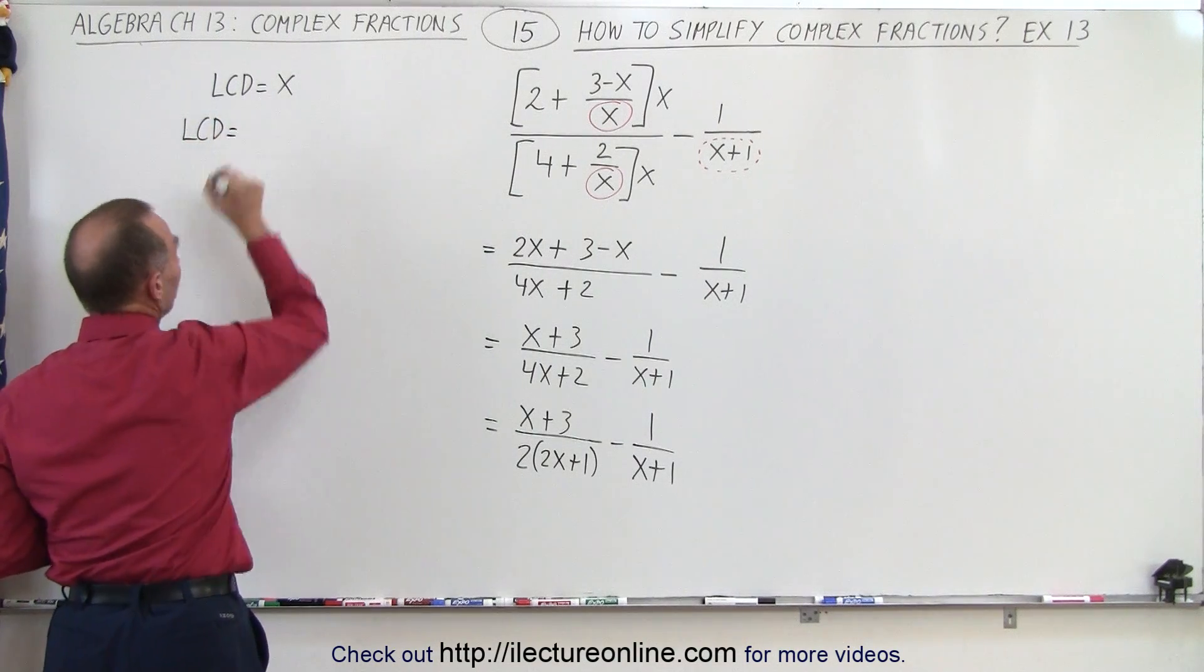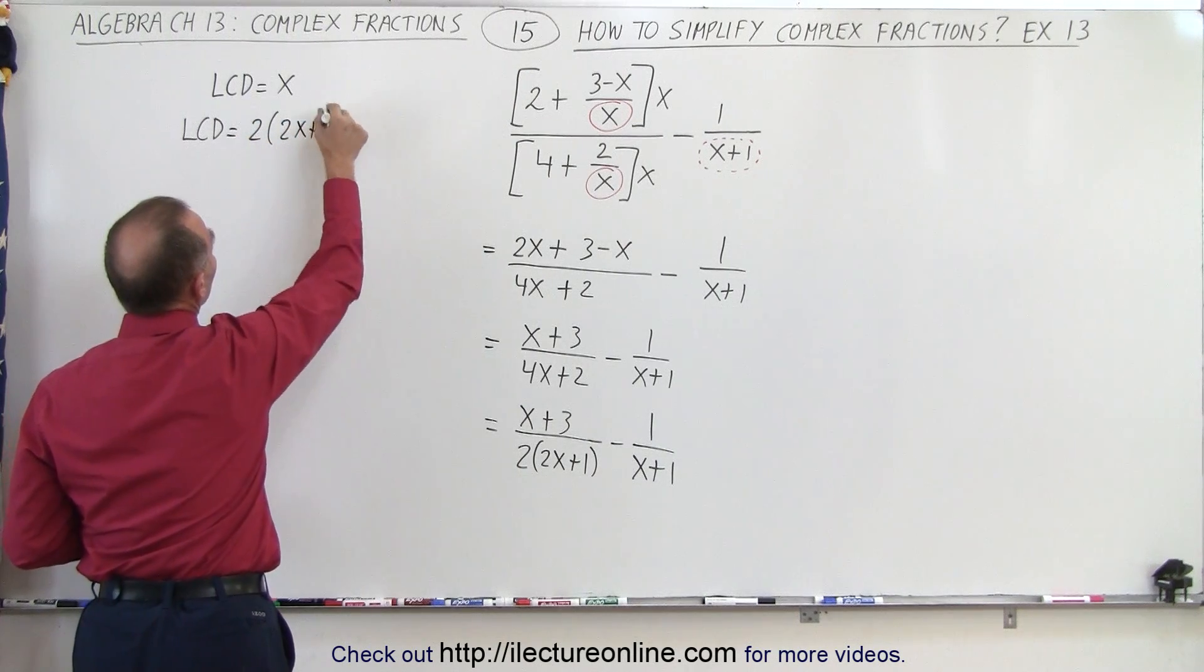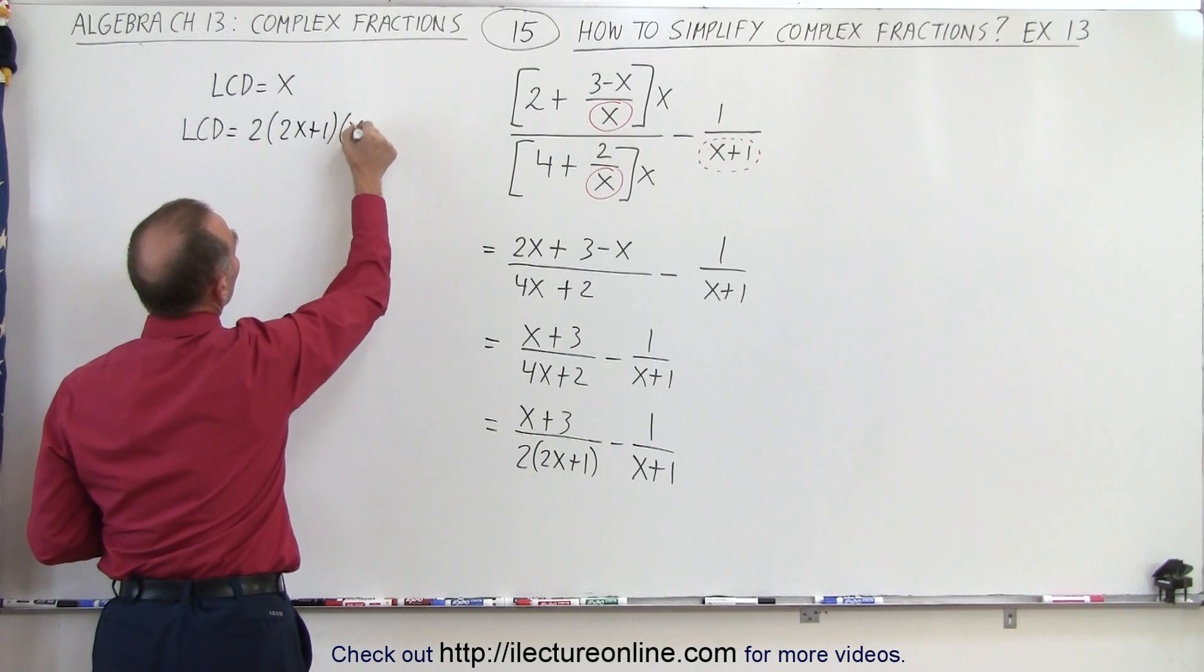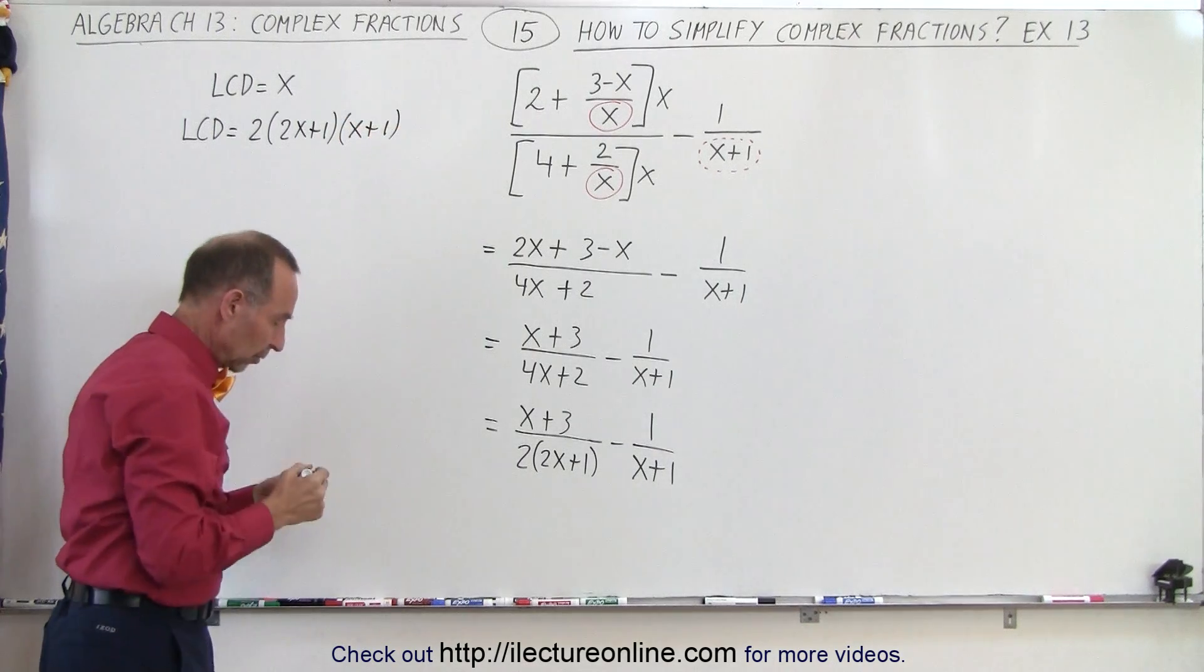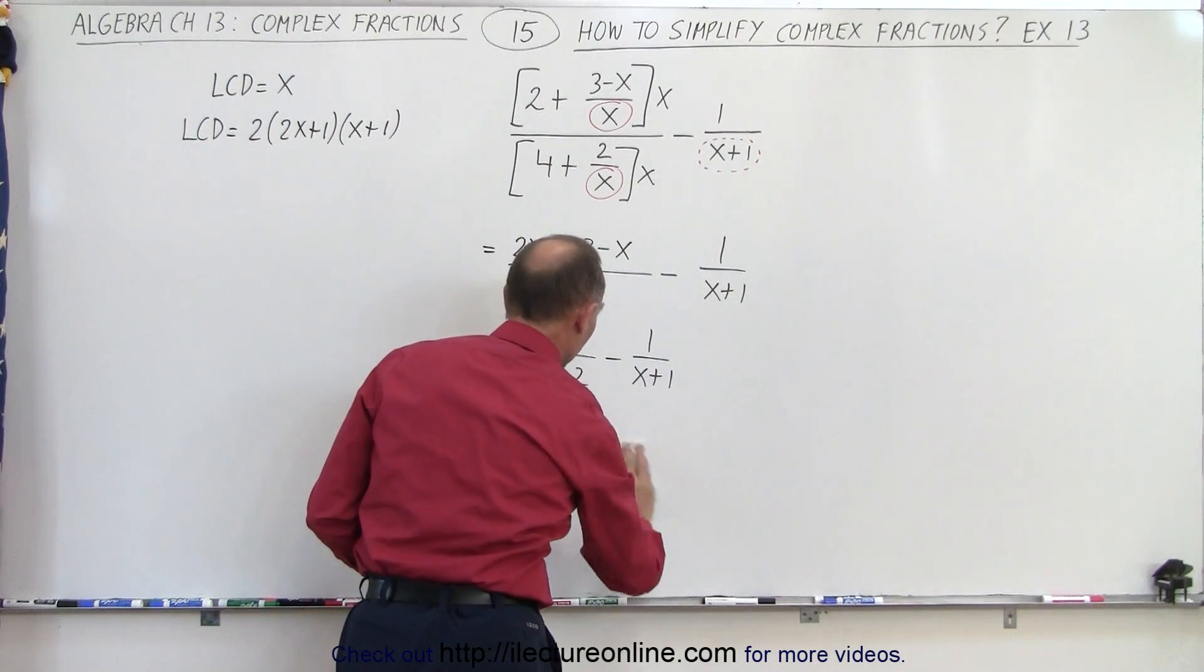So in this case the LCD for the second portion of the problem is going to be 2 times 2x plus 1 times x plus 1. So that means that we need to give ourselves a little bit more space so we're going to move this to the right.